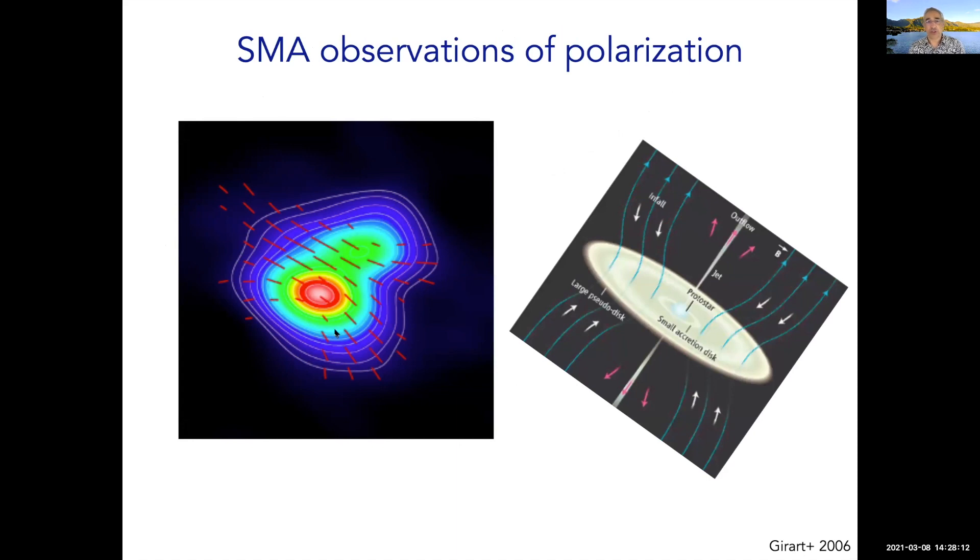Here's an example of the SMA observing polarized dust emission. The colors show the total intensity of the emission, and the red lines show the direction of the polarization. The polarization runs along this way, but there is a curvature that you can see on both sides of the source. This is emission, so the polarization vectors are perpendicular to the magnetic field direction. The inferred magnetic field has a direction that looks like this. We get a picture of a collapsing core that is dragging in the magnetic field lines and squeezing them in. The magnetic field lines are squeezed in due to gravitational collapse.